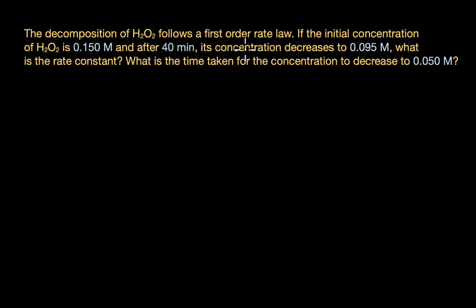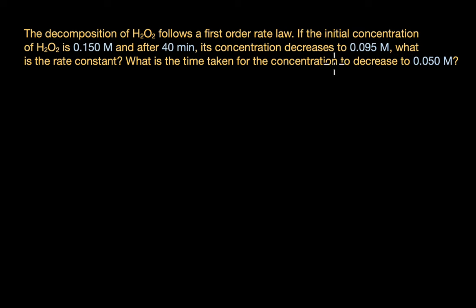In this video, we are going to solve a few questions on integrated rate equations. The first question says the decomposition of hydrogen peroxide follows a first order rate law. If the initial concentration of hydrogen peroxide is 0.150 molar and after 40 minutes its concentration decreases to 0.095 molar, what is the rate constant? We also need to figure out the time taken for the concentration to decrease to 0.050 molar.